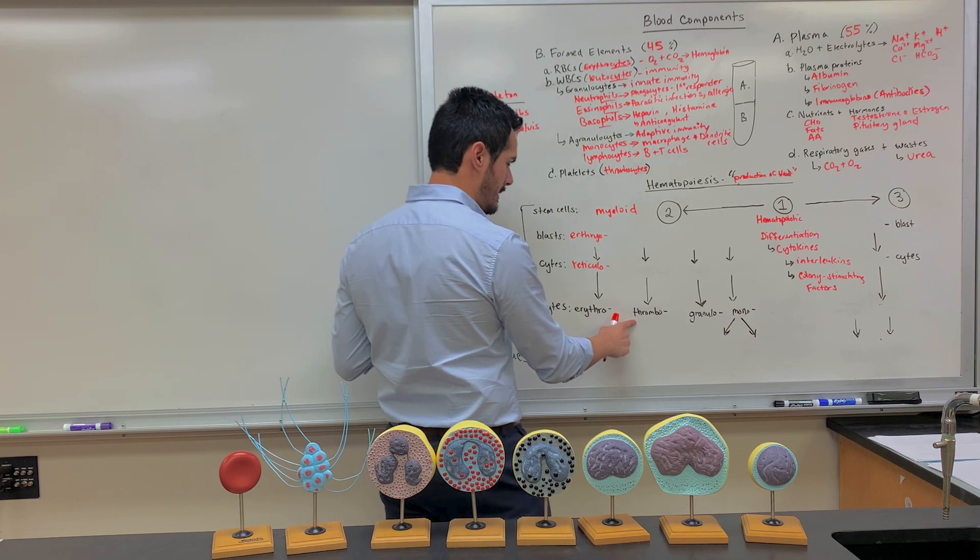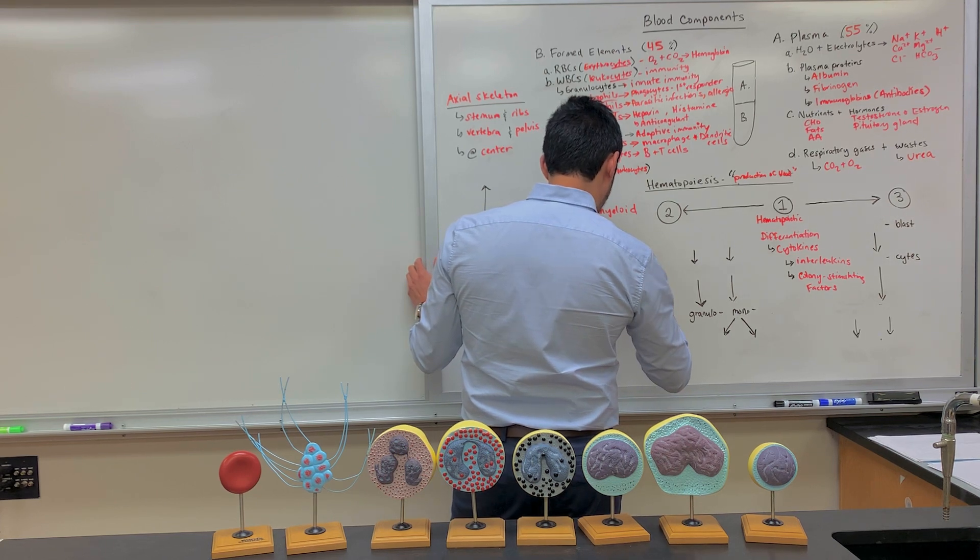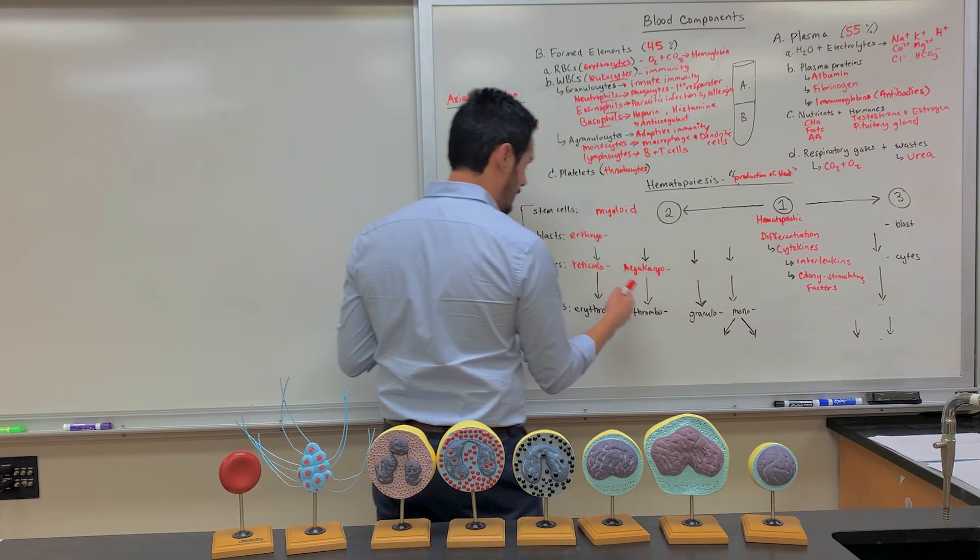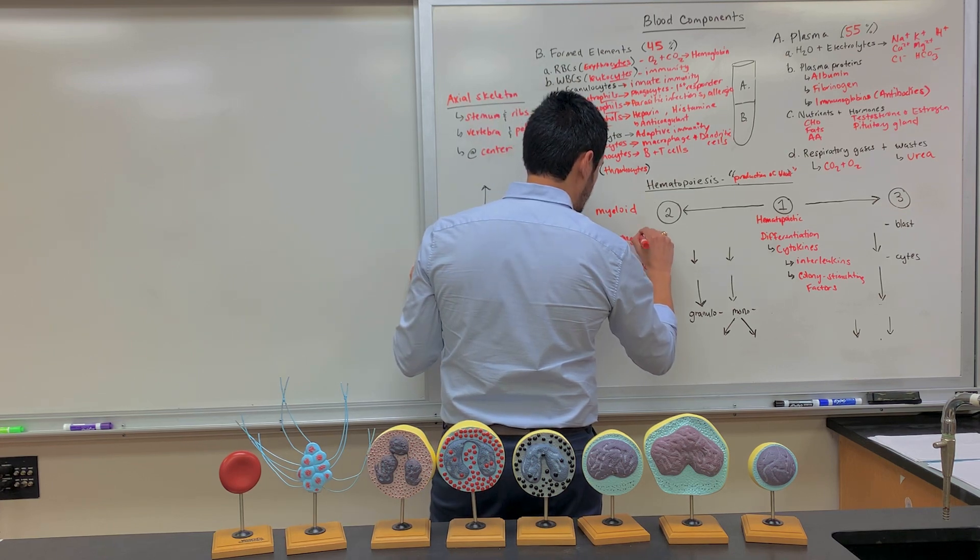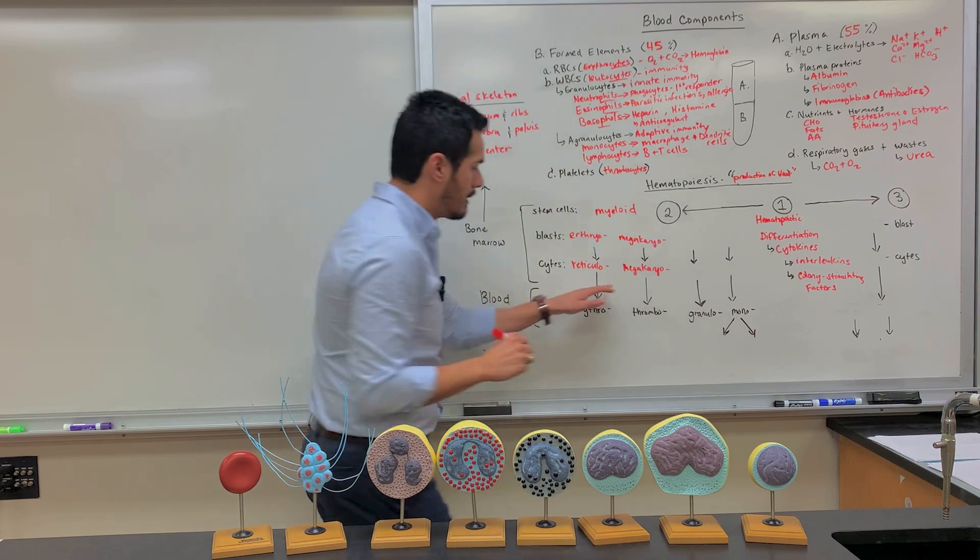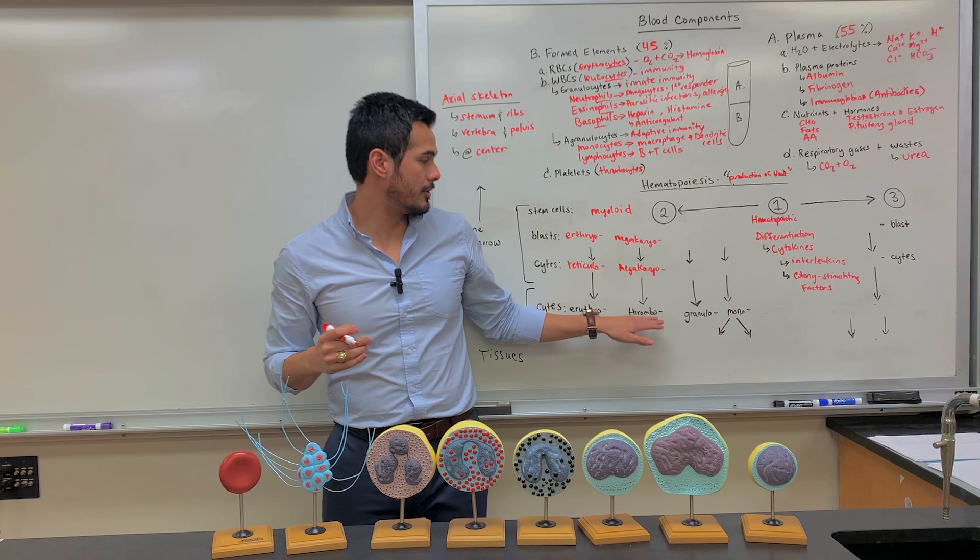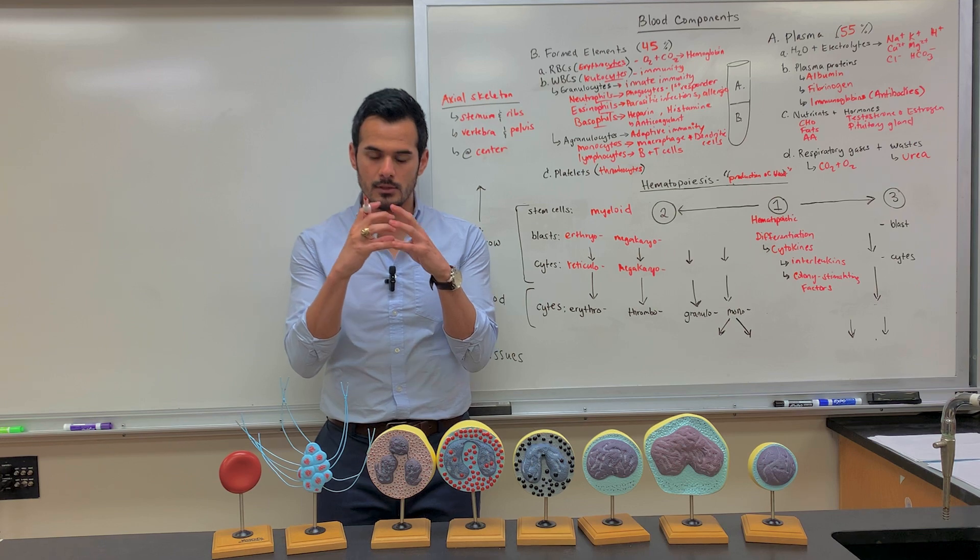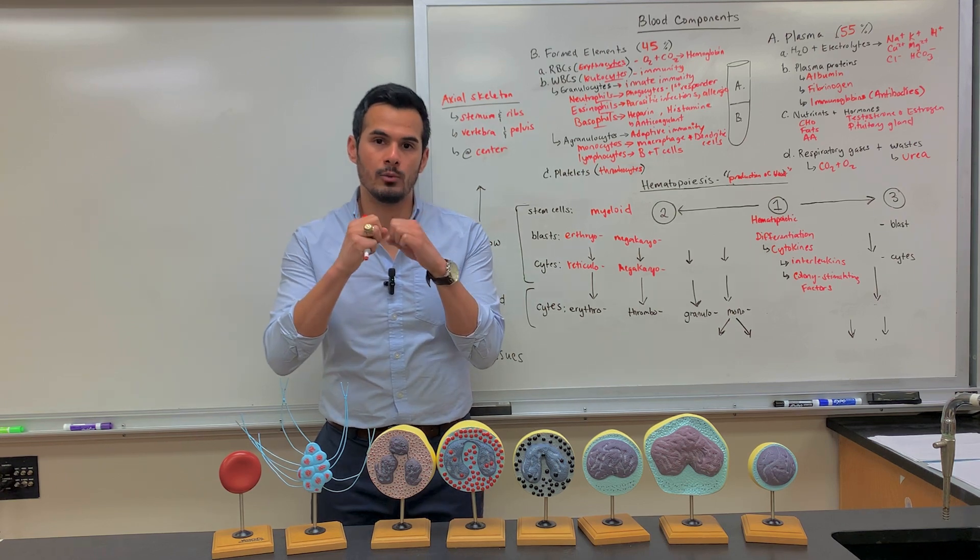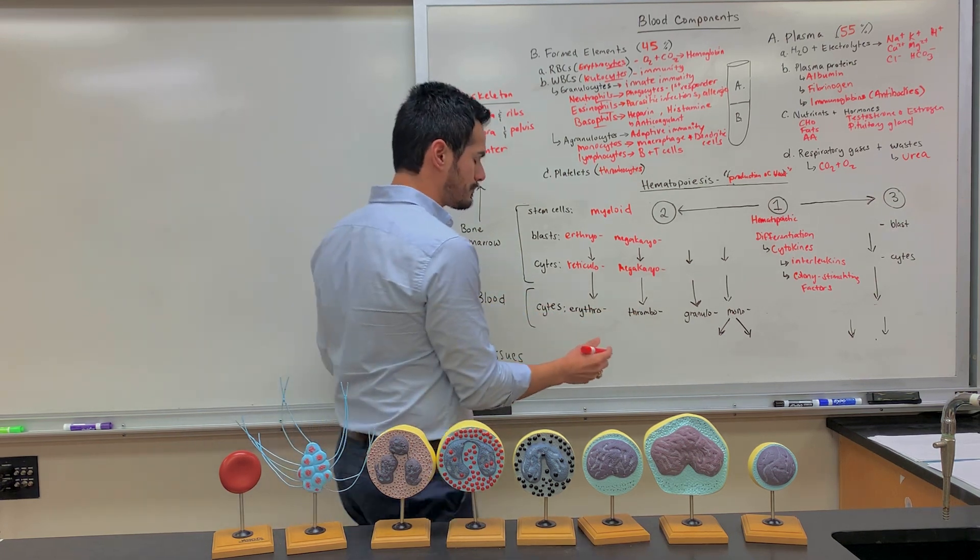So you have thrombocytes here. And what they come from is the megakaryocytes. And megakaryocytes, they come from megakaryoblast. So with the megakaryocytes, further differentiating to the thrombocytes, the megakaryocytes, they're these large cells, and they will rupture. And when they rupture, that's when they produce the thrombocytes or the platelets.